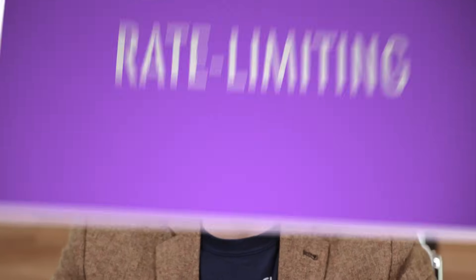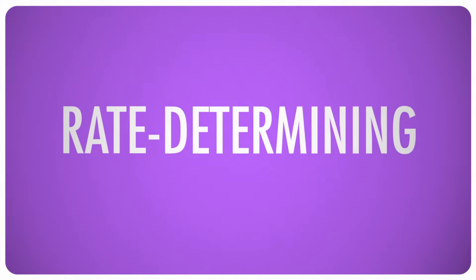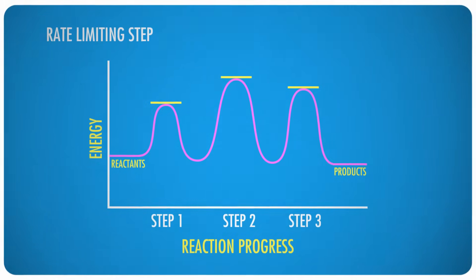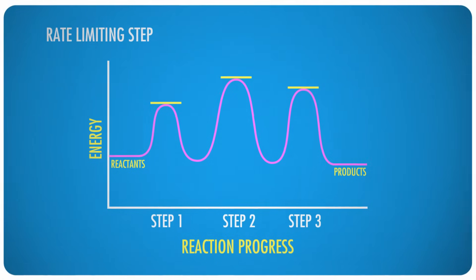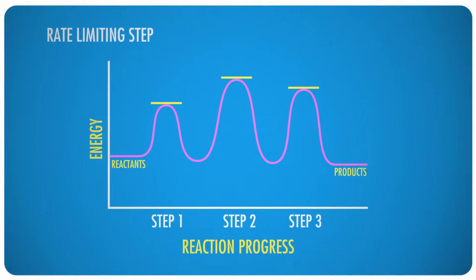Since it's what controls how fast everything else can go, we call it the rate limiting, or rate determining step. The slowest step is the one that has the highest activation energy. If the particles have trouble getting over that part of the energy hill, then they'll have trouble making it to the finish line, no matter how fast the other steps are.